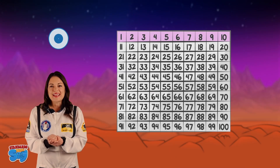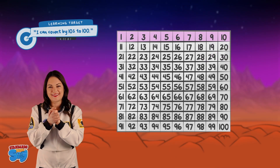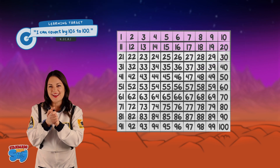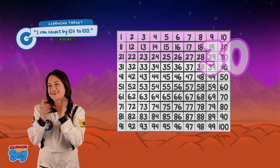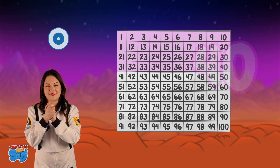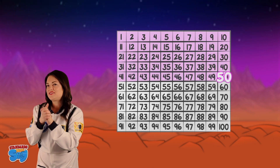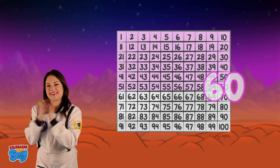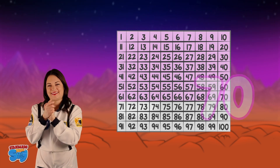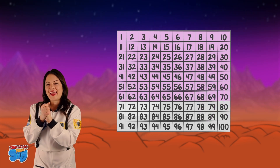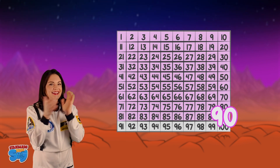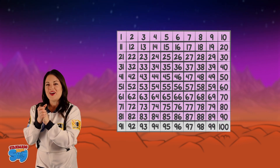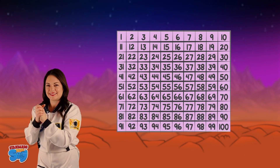10, 20, 30, 40, 50, 60, 70, 80, 90, 100. Great job counting by tens to 100 using the unifix cubes and the 100s chart.